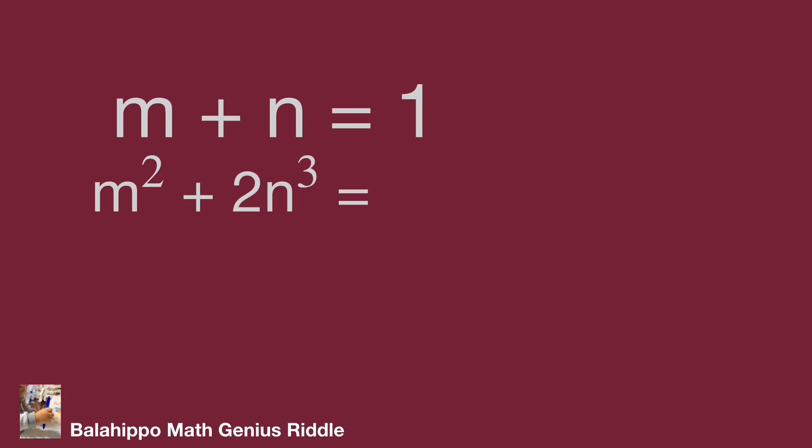Therefore, m squared equals 2a minus 11 plus 2 times quantity 2 minus a. Develop the items, eliminate a, then get the number minus 7. So here we have two new equations: m plus n equals 1 and m squared plus 2n cubed equals minus 7.